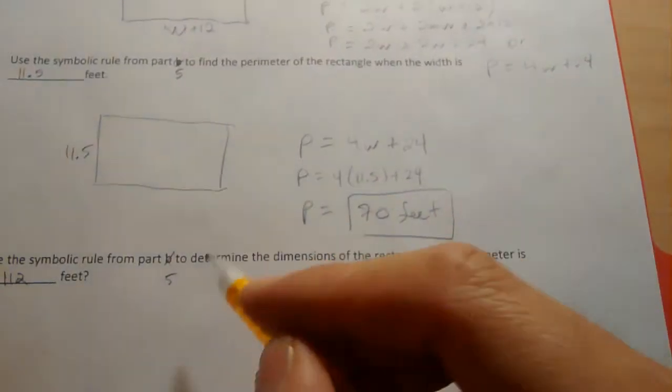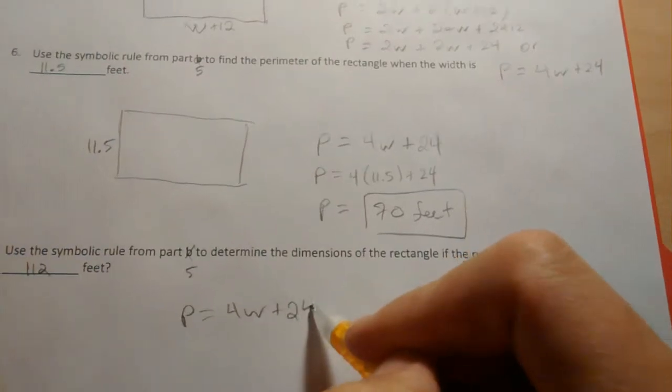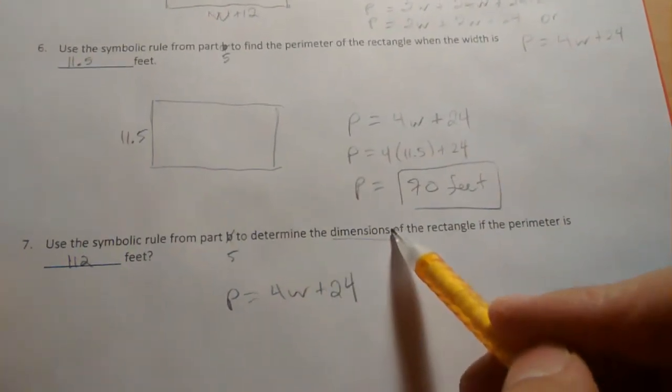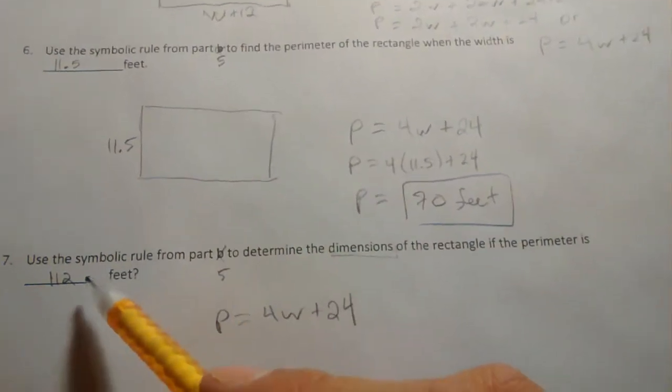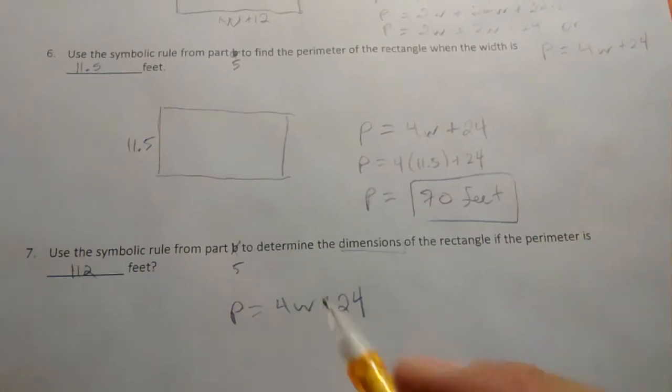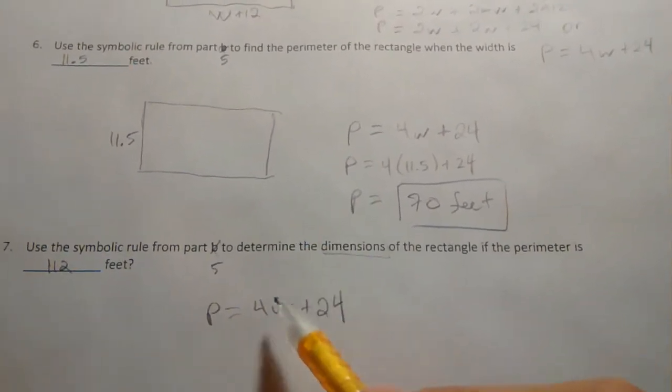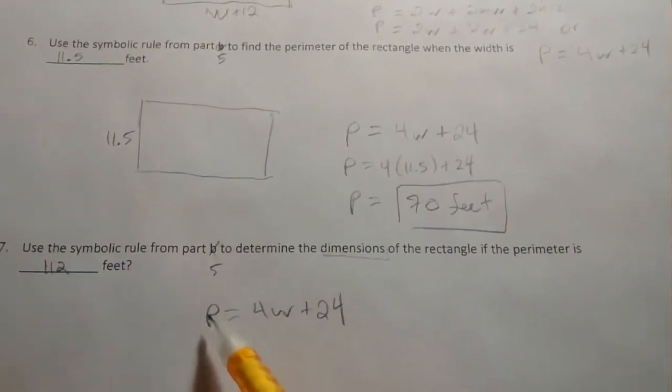We're going to backtrack using this symbolic rule. Dimensions means, you may not realize this, give me the length and width of a rectangle with this information. With 112 feet perimeter, we're going to backtrack and use this rule. We can find the width knowing the perimeter is 112.